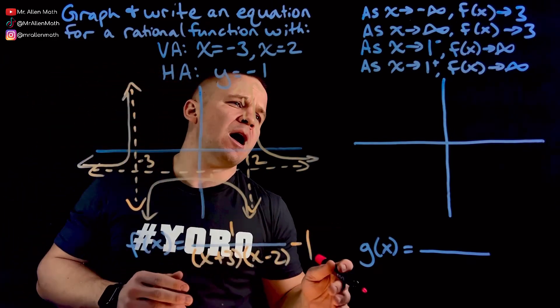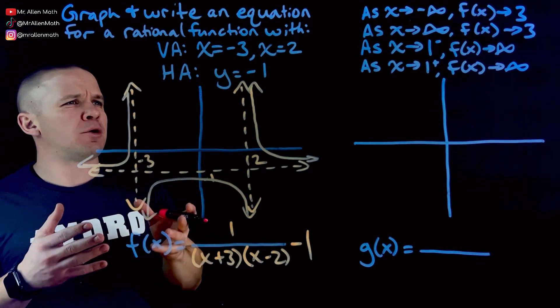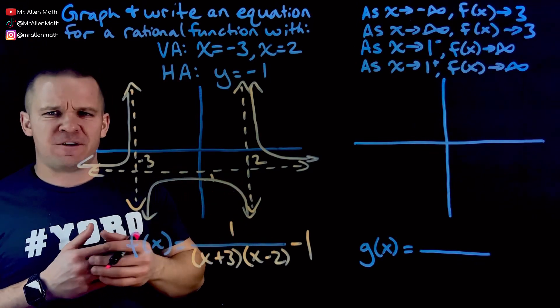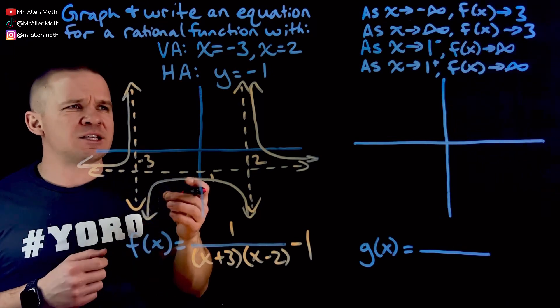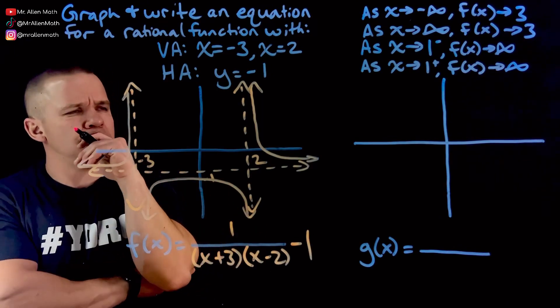All right, let's do it. So different wording here though. I have, as x approaches negative infinity, f(x) is approaching three. And as x approaches positive infinity, f(x) is approaching three. What the heck does that mean?